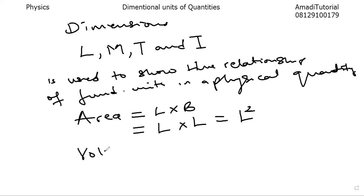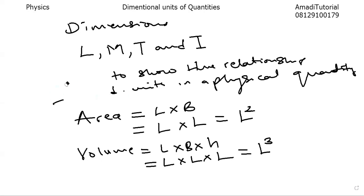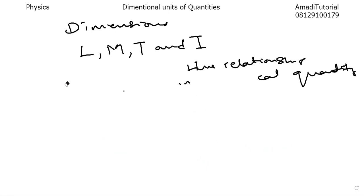If you look at the unit volume — volume is length times breadth times height — in the fundamental units, this is length times another length times another length. So the dimensional unit for volume is L raised to the power of three. We're going to take examples and find out the dimensional units for more derived quantities.